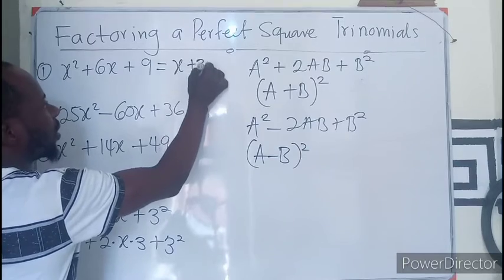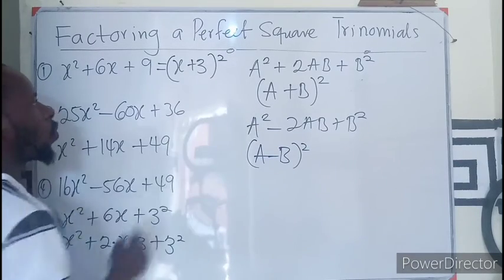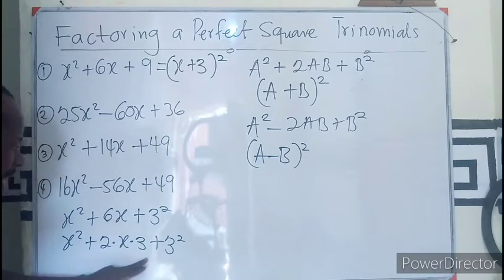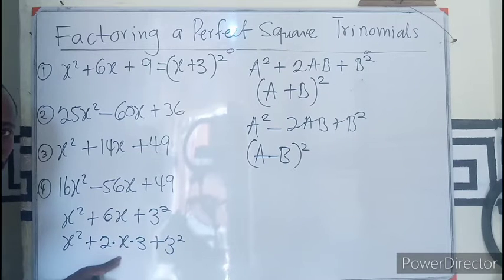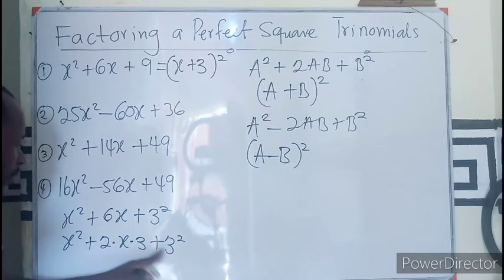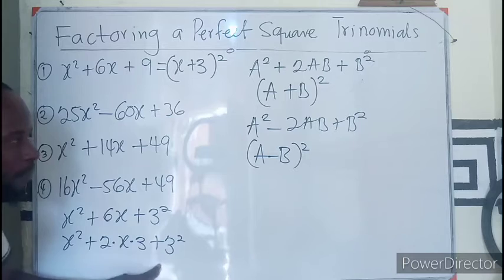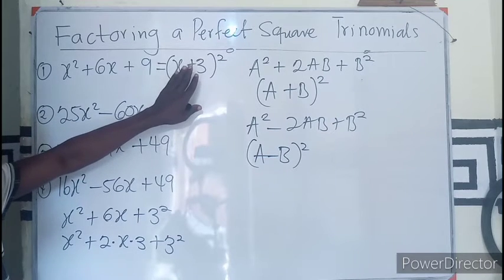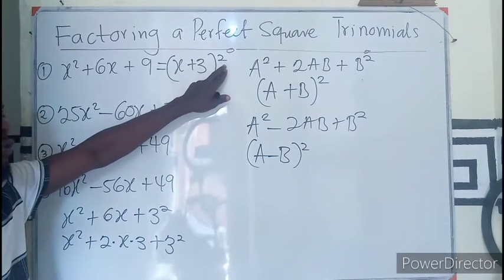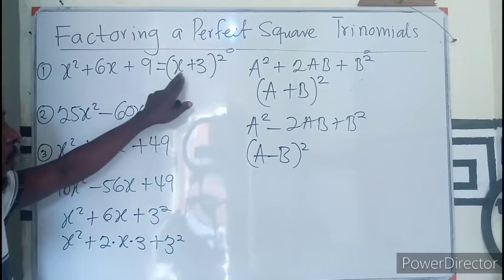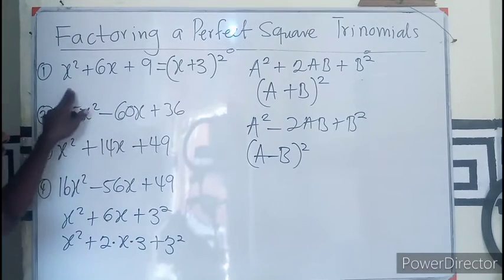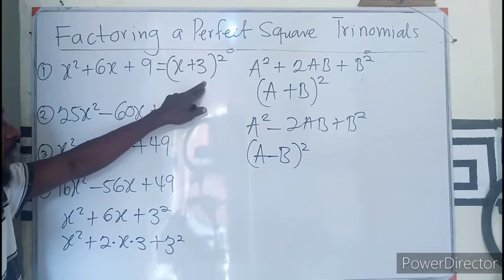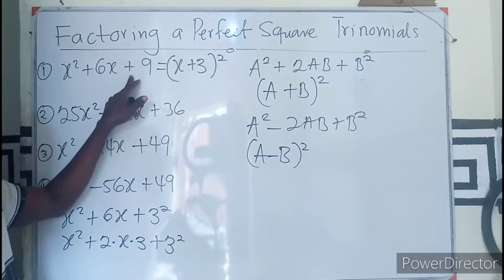So the moment you can be able to spot that the middle term is twice the product of the first and the last step, your answer is just the first term and the last term all squared. Because if you open this square—the first, twice their product, square the last—you get your answer.